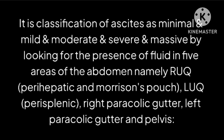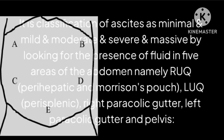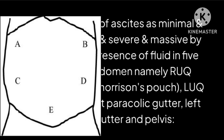It is a classification of ascites as minimal, mild, moderate, severe, and massive, by looking for the presence of fluid in five areas of the abdomen: right upper quadrant, perihepatic and Morrison's pouch, left upper quadrant perisplenic, right pericholic gutter, and left pericholic gutter and pelvis.